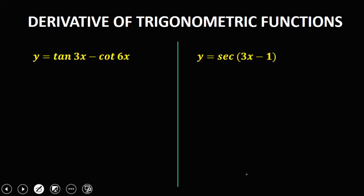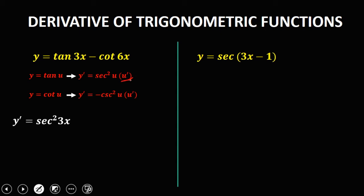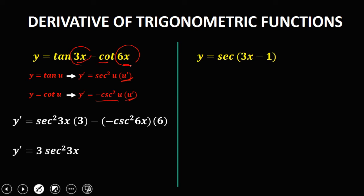For this given, y equals tangent(3x) minus cotangent(6x). Since the derivative of tangent is secant squared u, and for cotangent that's negative cosecant squared u, y prime for the tangent part is secant squared(3x) times the derivative of 3x, which is 3. Then negative times negative gives positive, so the cotangent part contributes 6 cosecant squared(6x). So y prime equals 3 secant squared(3x) plus 6 cosecant squared(6x).